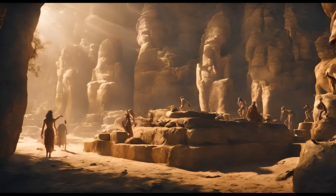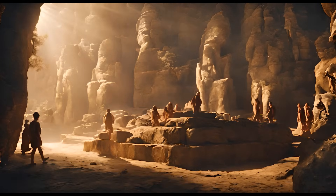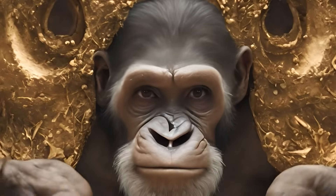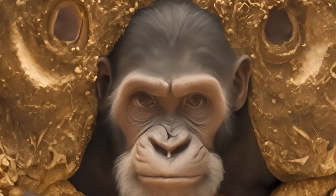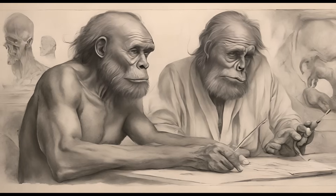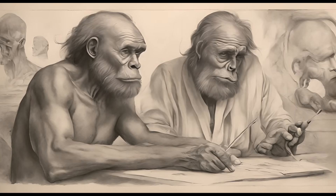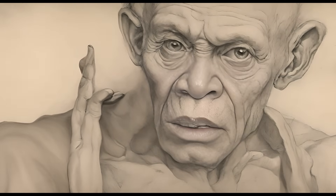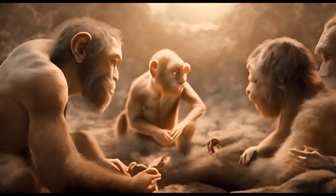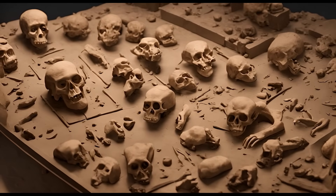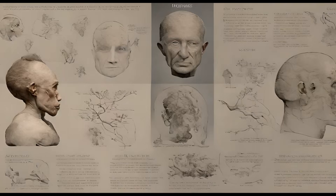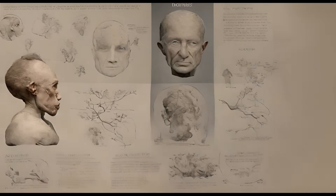The theory of evolution by natural selection has had a profound impact on our understanding of life on Earth. It provides an explanation for the diversity and complexity of organisms we see today, and helps us trace back common ancestry among different species. The theory is supported by extensive evidence from various scientific disciplines, including genetics, paleontology, and comparative anatomy. This body of evidence continues to grow as new discoveries are made. Overall, the theory of evolution by natural selection remains one of the most influential scientific theories ever proposed, and continues to shape our understanding of life's origins and development.